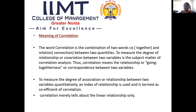To measure the degree of association or relationship between two variables quantitatively, an index of relationship is used, termed as the coefficient of correlation. The range of the coefficient of correlation is between minus one to plus one. The plus and minus sign indicate the directions of the variables, and the numerical value indicates the degree of the relationship. One important point: correlation fails to tell us the causation effect — it does not tell the cause and effect relationship. Correlation merely tells about the linear relationship between the two variables.